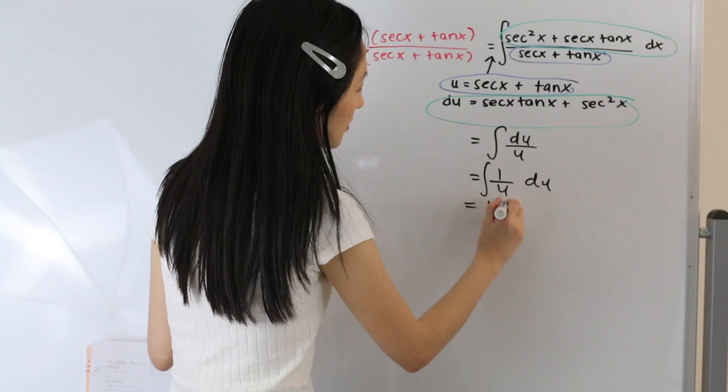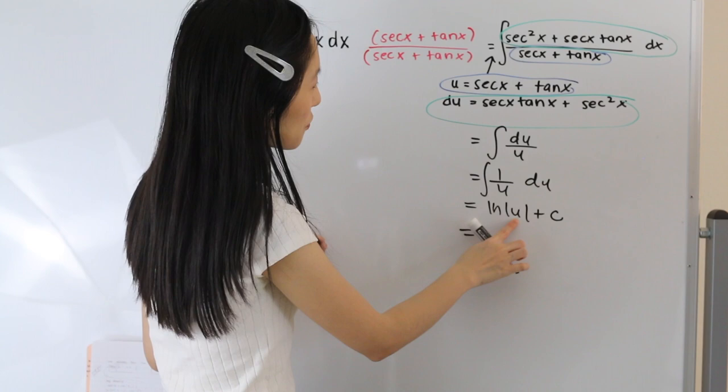So from here, we can go ahead and substitute u for the secant of x plus tangent of x. That gives us the ln of secant of x plus tangent of x plus c as our final answer.